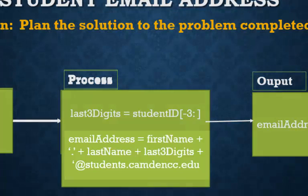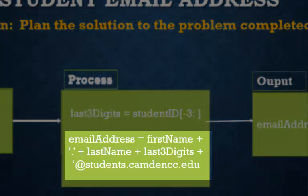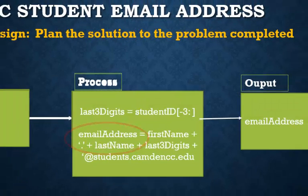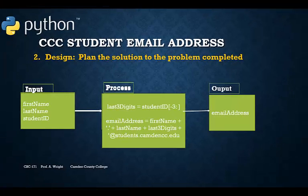In order to create the email address, we concatenate the first name, a period, the last name, then the last three digits, and the string @students.camdencc.edu. We'll save this string in a variable named emailAddress. It's a good idea to decide on the names of the variables right now and include them in our design. Okay, we're ready to code.